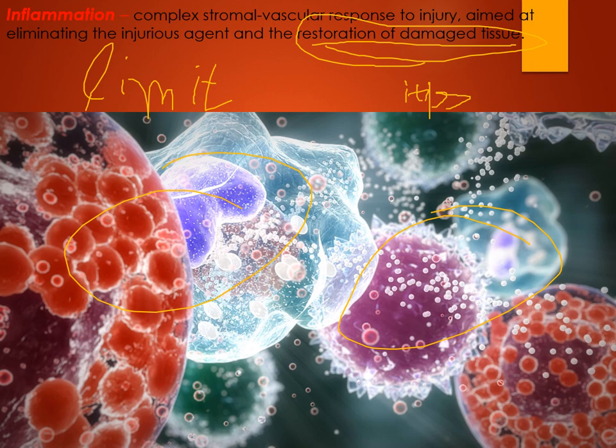Since inflammation is a protective mechanism, it has three main functions. Function number one: delimitation of the area of damage — limiting the spread of the injurious agent. Function number two: elimination of the injurious agent. Function number three: restoration of damaged functions of the body, also called repair.